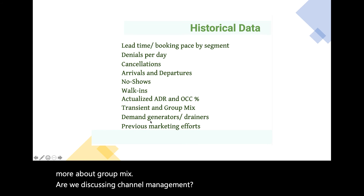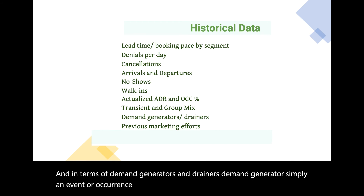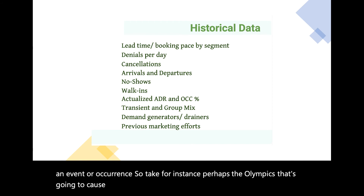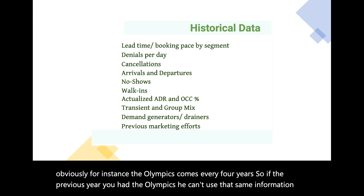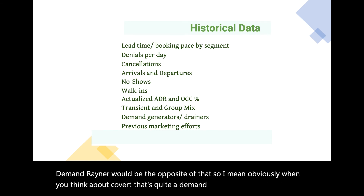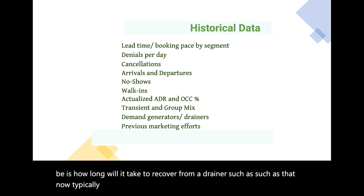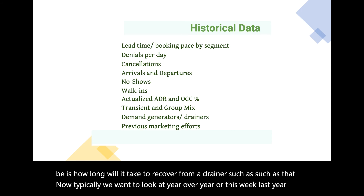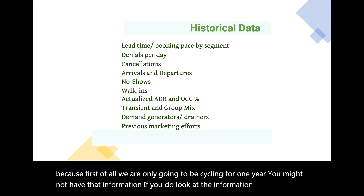In terms of demand generators and drainers: a demand generator is simply an event or occurrence. Take the Olympics — that's going to cause more demand. The Olympics comes every four years, so if the previous year you had the Olympics, you can't use that same data for the next year. A demand drainer is the opposite — COVID is a clear example. Typically we want to look at year-over-year data. If you look at the information tab under market index in the sim, it will give you last year's historical data.